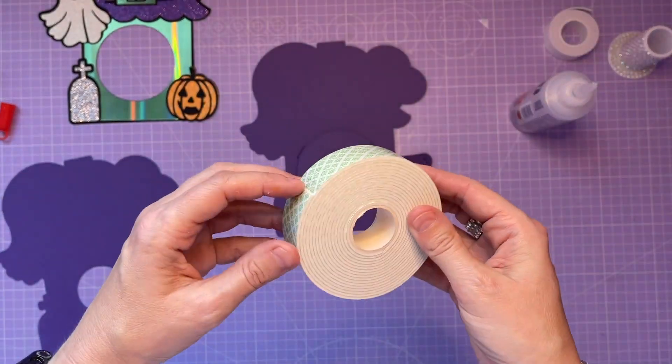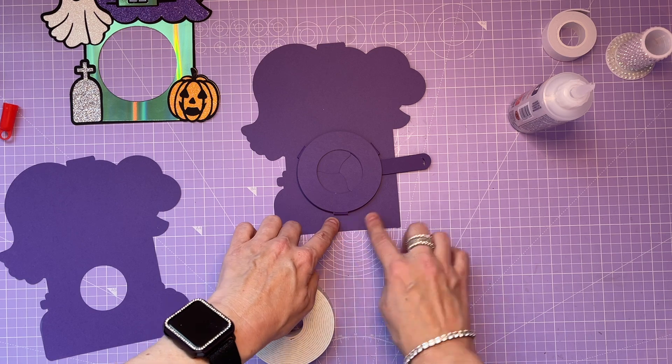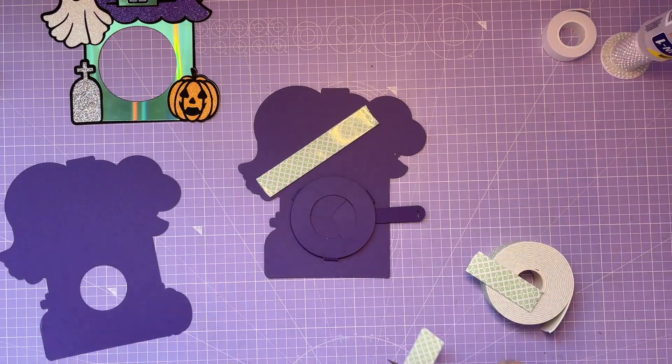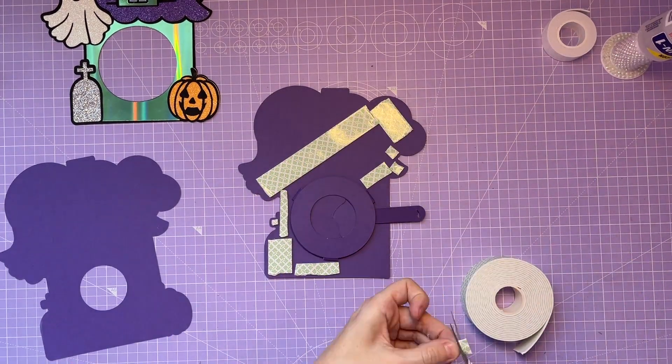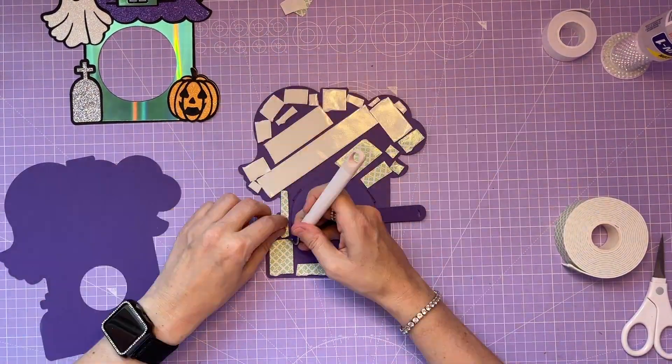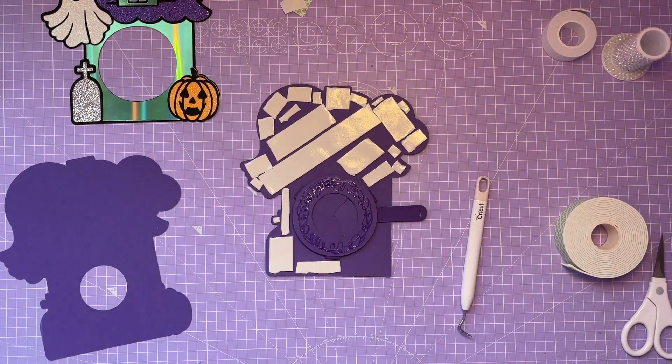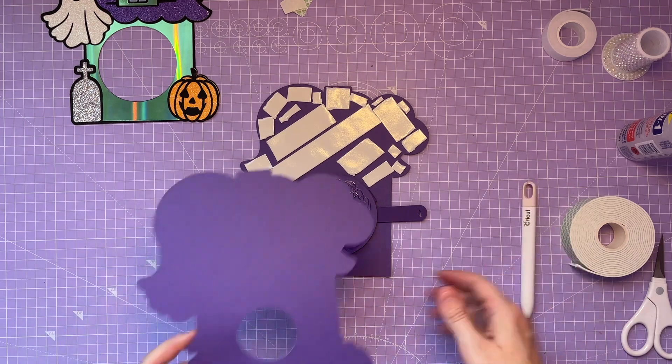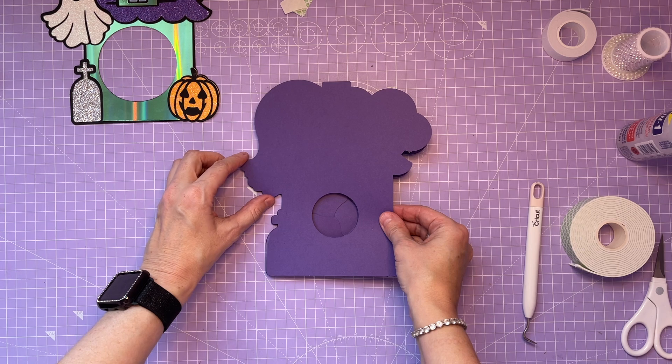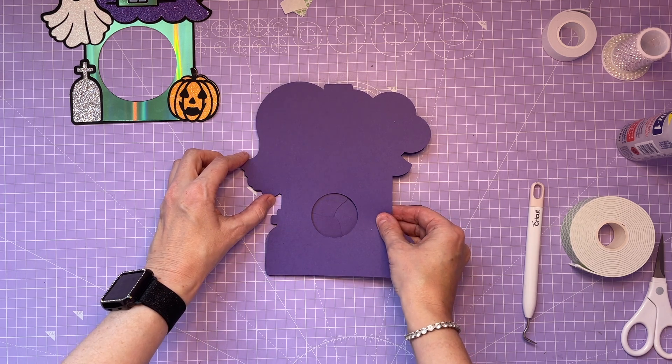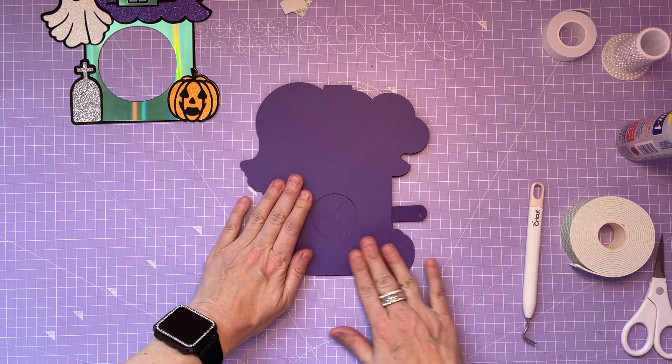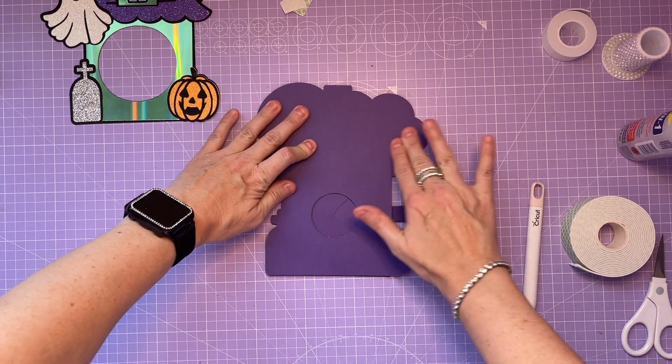And then I use double-sided foam tape all over this back area, avoiding this area where the arm will swing. The next step is to use the Beacon 3-in-1 again and go around that outer ring again, just like we did in the first instance. And then we're sandwiching that iris shutter between these two pieces. So just align it up in that center as best you can and around the edges, and then give it a good squeeze.